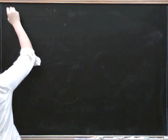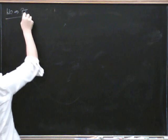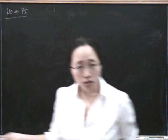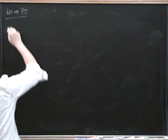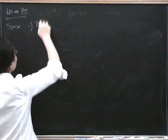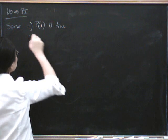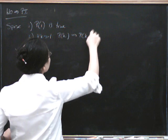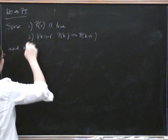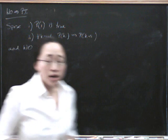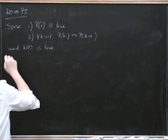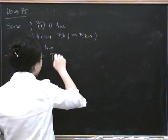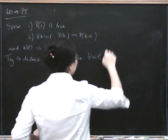We're going to show that well-ordering implies the principle of induction. What we have to do is suppose the hypothesis of the principle of induction and deduce the conclusion using well-ordering. So we're going to suppose: (1) that p of 1 is true, (2) that for all k greater than or equal to 1, p of k implies p of k plus 1. We're also going to suppose that well-ordering is true — that every non-empty subset of natural numbers has a least element. We now try to deduce the conclusion: that p of n is true for all n in the natural numbers.